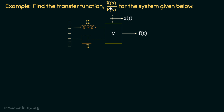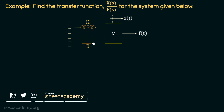Find the transfer function x over f for the system given below. One mechanical system is given to us, and if we observe this mechanical system carefully, we can see that there is a body of mass M, which is connected with a spring and a damper, and the spring and the damper are connected to a fixed support. A force f is applied on the body of mass M to the right hand side, and due to this force, there is a displacement x to the right hand side.